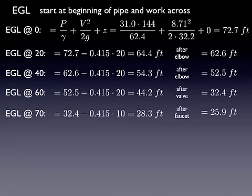At 40 feet, we've dropped more because of another 20 feet of major head losses. There's another elbow, so we lost another foot. We traveled through 20 feet of straight length pipe again to get us to 60 feet. And there's a loss associated with that. Then there's a pretty big loss due to the valve, another 10 feet of travel, and then the faucet. And we end up with 25.9 feet of head, or of energy, exiting the system.